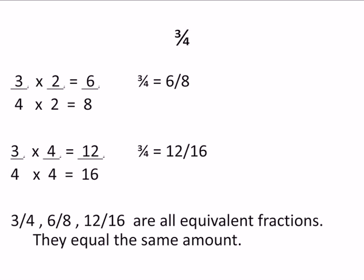If you had, let's see, if you had 8 M&Ms and you ate 6 of them, you ate 6 eighths of them. Well, if you want to put them into 4 groups, there'd be 2 M&Ms in each group. And you ate 3 fourths of those groups. You'd eat 2, 4, 6. You'd eat 6 M&Ms.